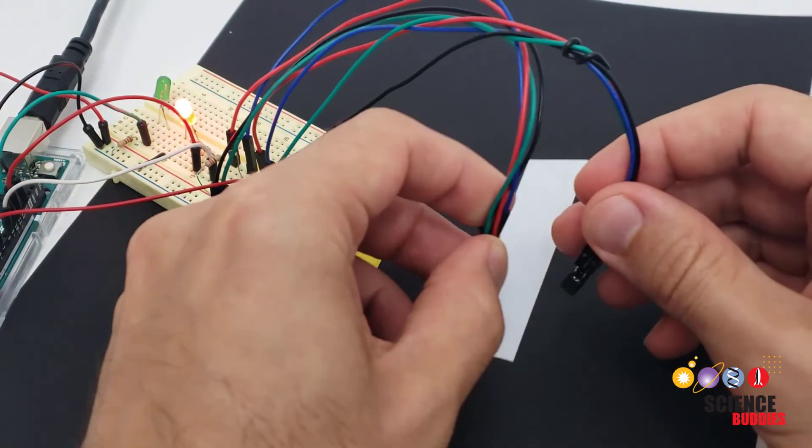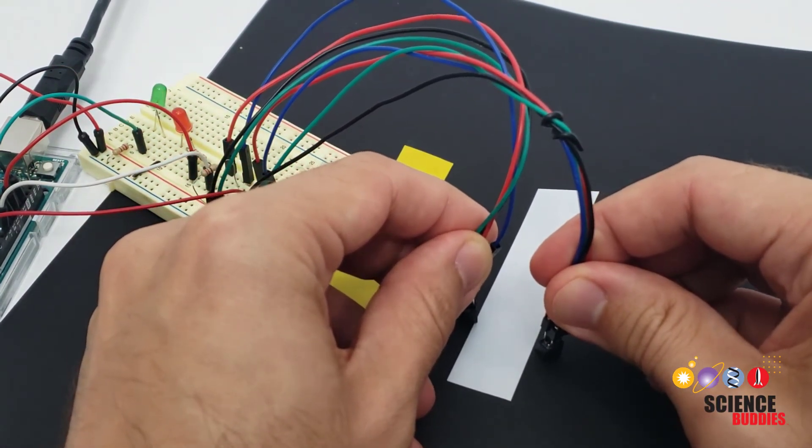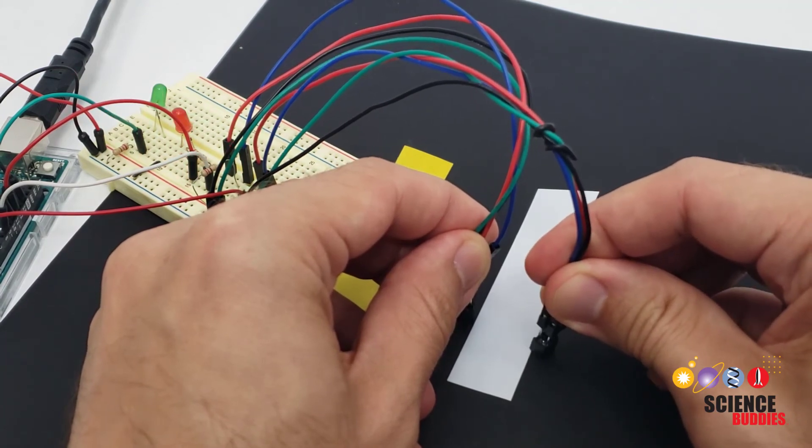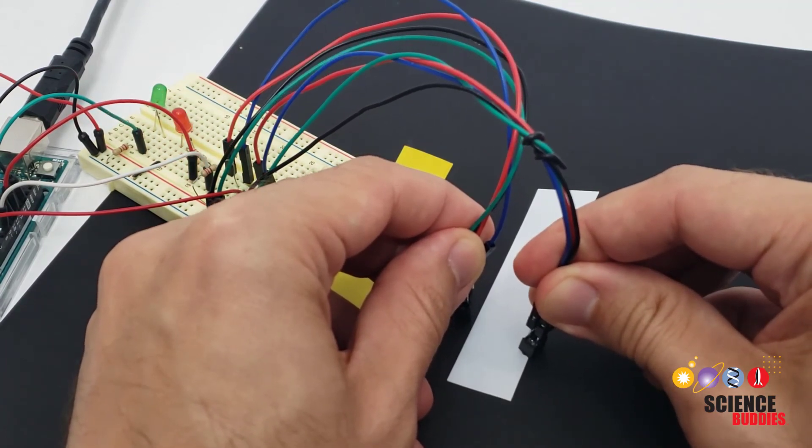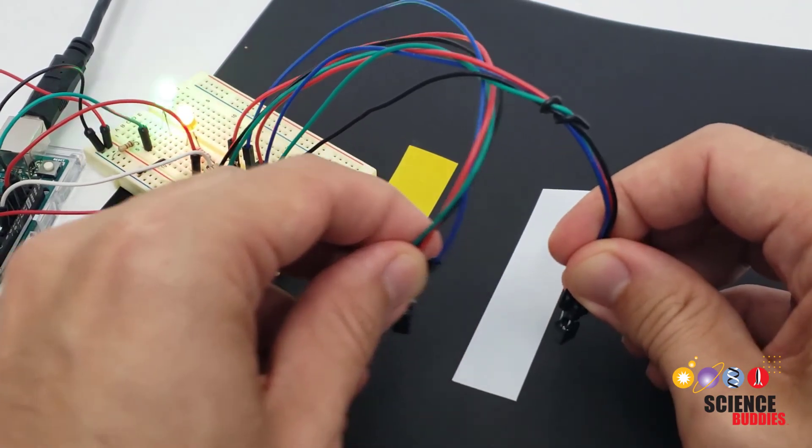I could also use these again for an autonomous car or a line following robot where I have one sensor on each side of a line if I'm doing a line following robot and then when one of these sensors goes over the line because the robot is drifting away I would know to correct my steering and get back on the line.